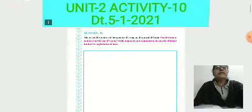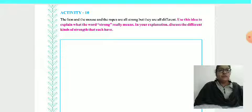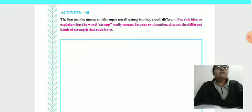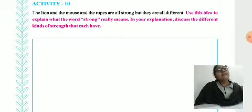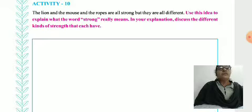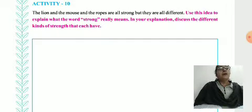In Activity 9 we studied about the story of the lion and the mouse. In this Activity 10, the lion, the mouse, and the ropes are all strong, but they are all different. Use this idea to explain what the word 'strong' really means. In your explanation, discuss the different kinds of strength that each have. So we have to give meanings and explanation about the word 'strong'.